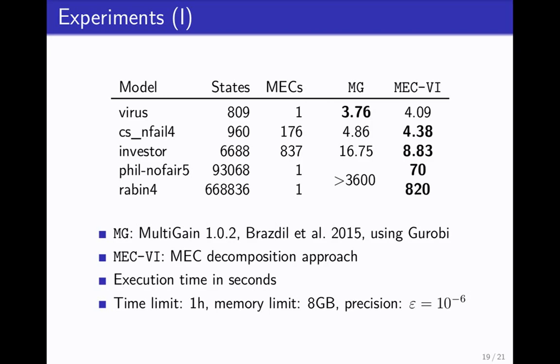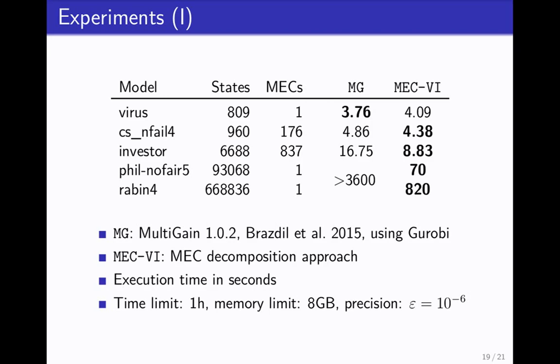Now that's the theory. Now give you the numbers. The numbers are quite good. We compare to the only tool we found doing mean payoff, which is multi-gain. It's actually built for multi-objective, multi-gain, so the comparison isn't completely fair. But as you see here, we just completely beat it in any reasonable model. We also improved the implementation a bit to get these numbers down to more like 50 and 80 or something.